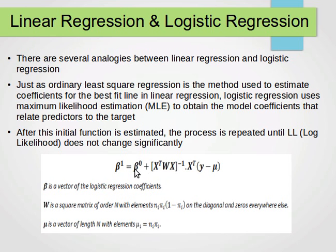We have these vectors of coefficients or parameters: beta 1 equals beta 0 plus x transpose times W times x times the inverse of the resulting matrix, then multiply by x transpose again times y minus mu. Y is the predicted or dependent variable. Beta is a vector of logistic regression coefficients, W is a square matrix of order n with elements mu i equals ni times pi i. Mu is a vector of length n.